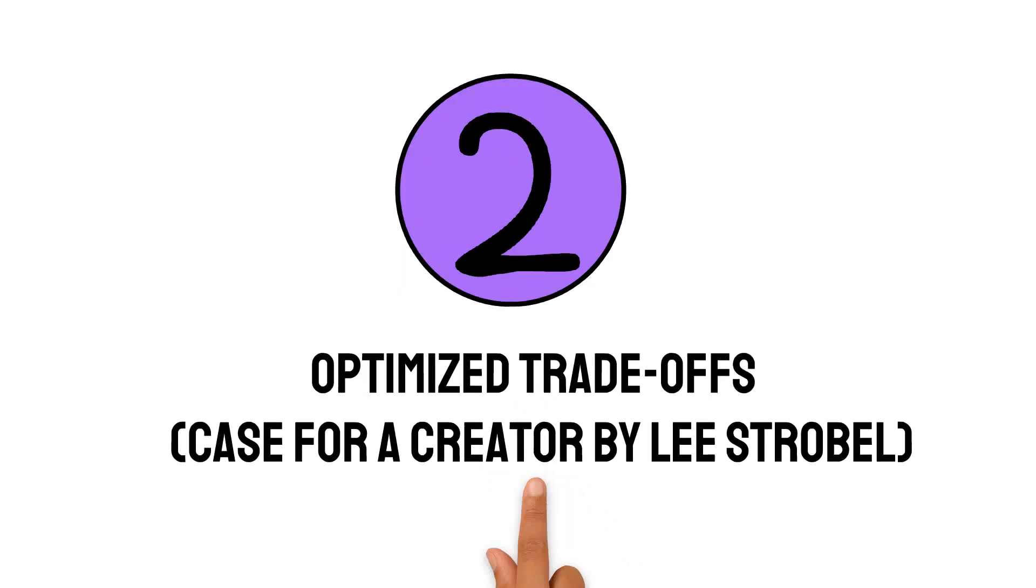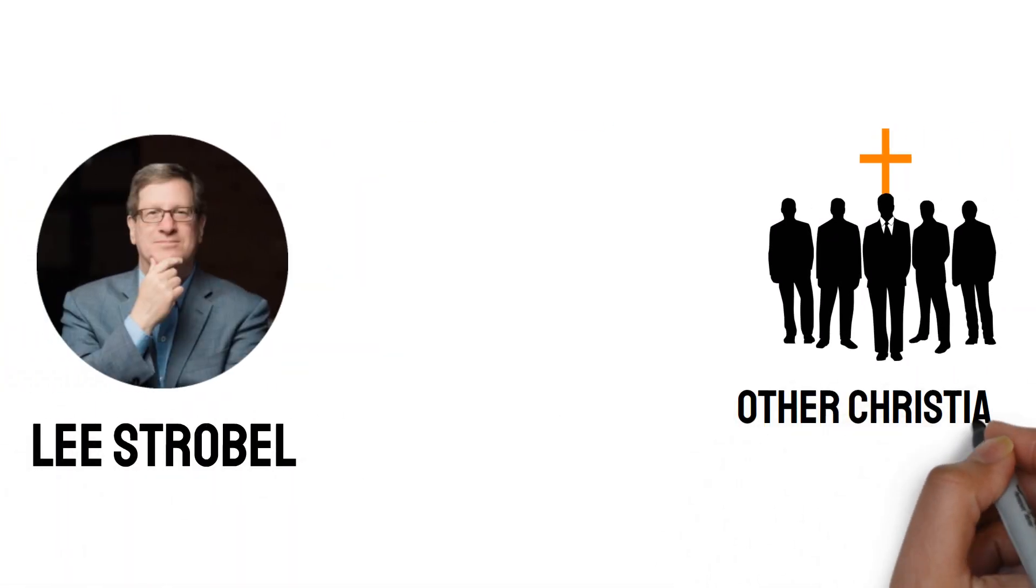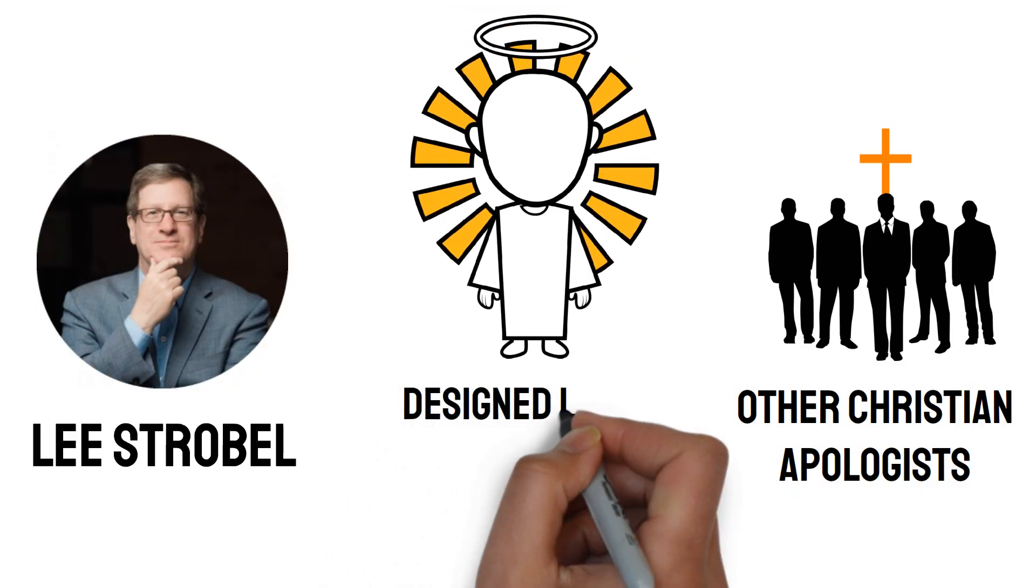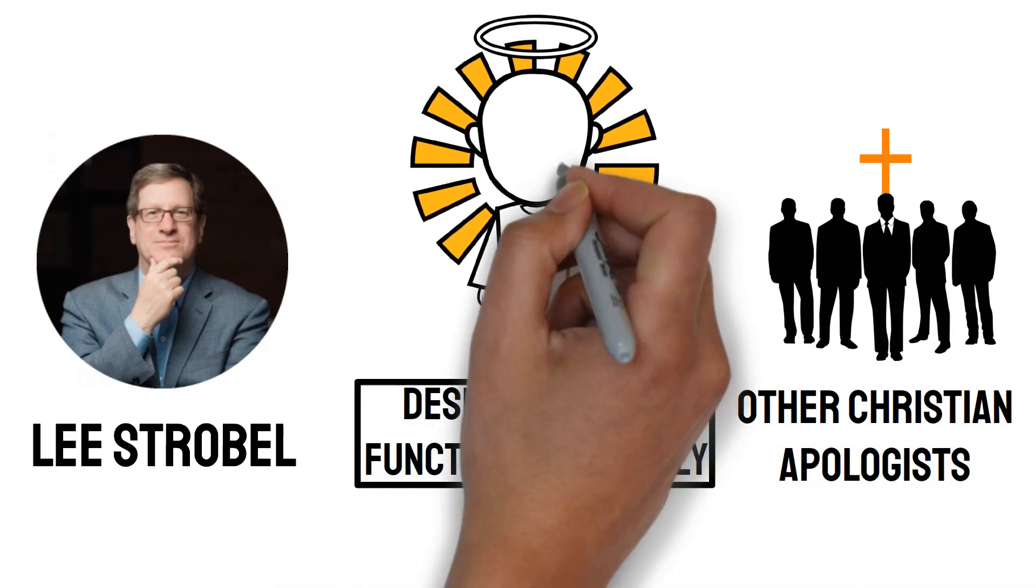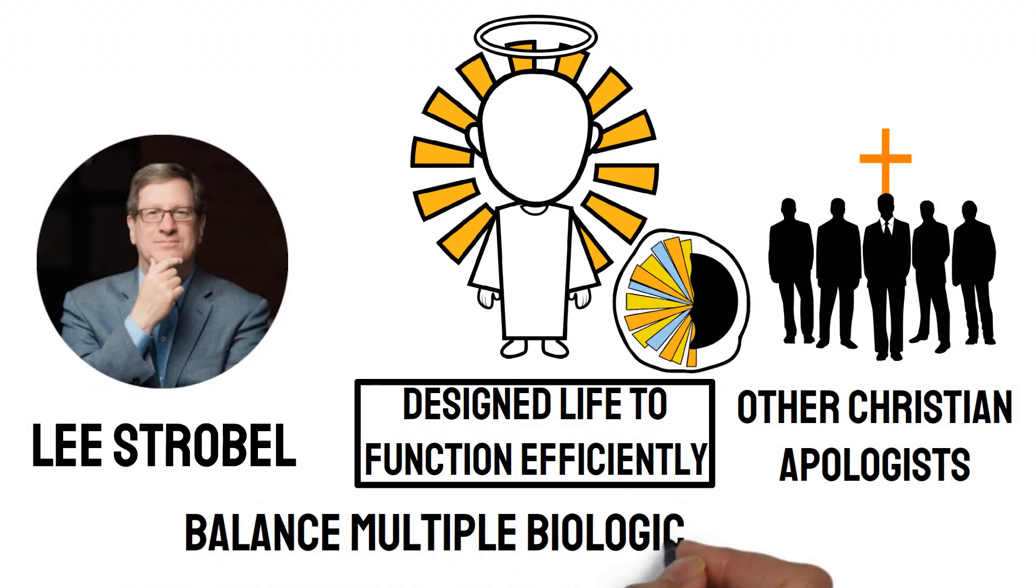Number two, optimized trade-offs. Many so-called examples of poor design are actually examples of optimized trade-offs. Lee Strobel and other Christian apologists argue that God designed life to function efficiently within the constraints of a fallen world, leading to designs that balance multiple biological factors.